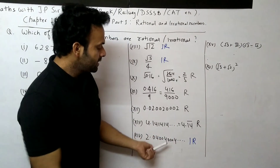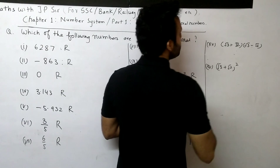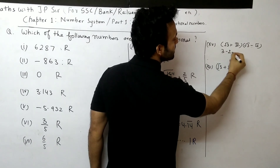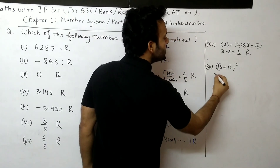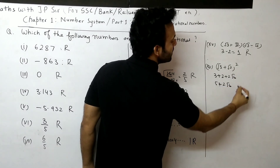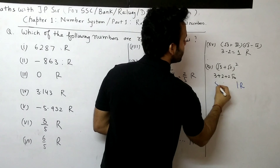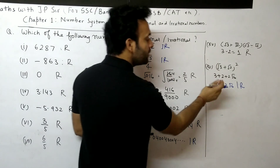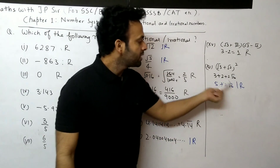You can identify irrational numbers by the widening gap pattern. For the algebraic expression (root 3 + root 2)(root 3 − root 2): using the identity (a + b)(a − b) = a² − b², it becomes 3 − 2 = 1, which is a rational number. For (root 3 + root 2)²: expanding gives 3 + 2 + 2·root 6 = 5 + 2·root 6. Since 5 is rational but 2·root 6 is irrational, adding a rational to an irrational gives an irrational number — so this is irrational.